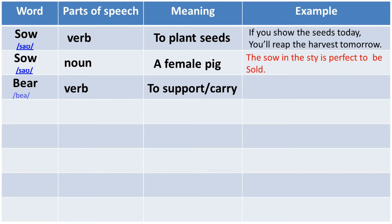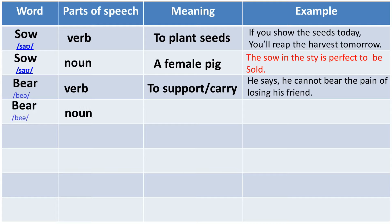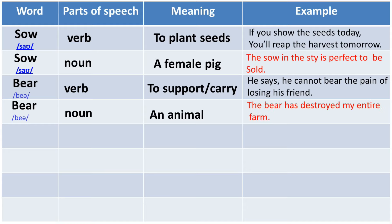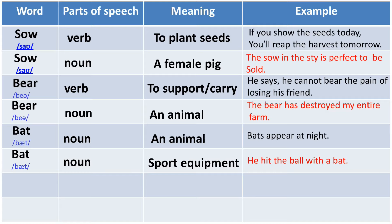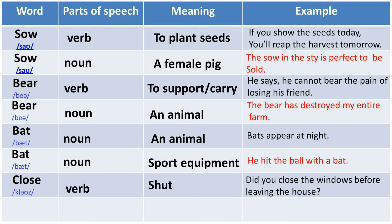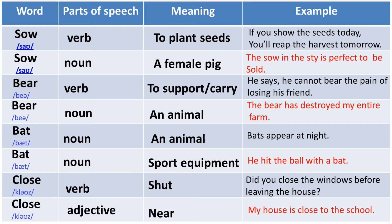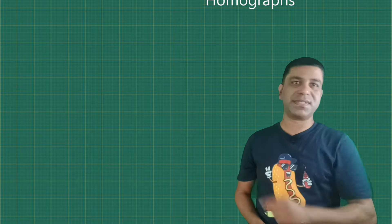Bear as a verb means to support or carry — for example, 'He says he cannot bear the pain of losing his friend.' Bear as a noun means the animal — for example, 'The bear has destroyed my entire farm.' Bat as a noun has two different meanings: bat can mean the animal — 'Bats appear at night' — and bat also means a sports equipment — 'He hit the ball with a bat.' Close as a verb means to shut — 'Did you close the windows before leaving the house?' Close as an adjective means near — 'My house is close to the school.' These words have the same spelling and same pronunciation but completely different meanings, so they are homographs.